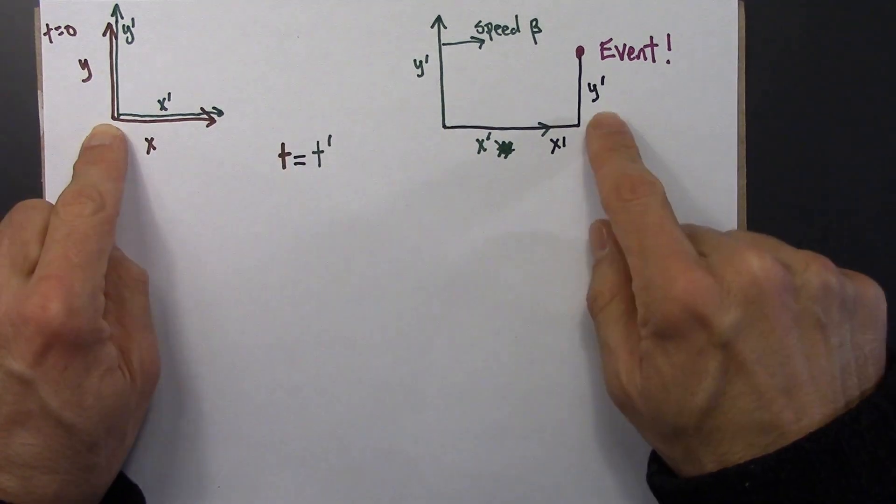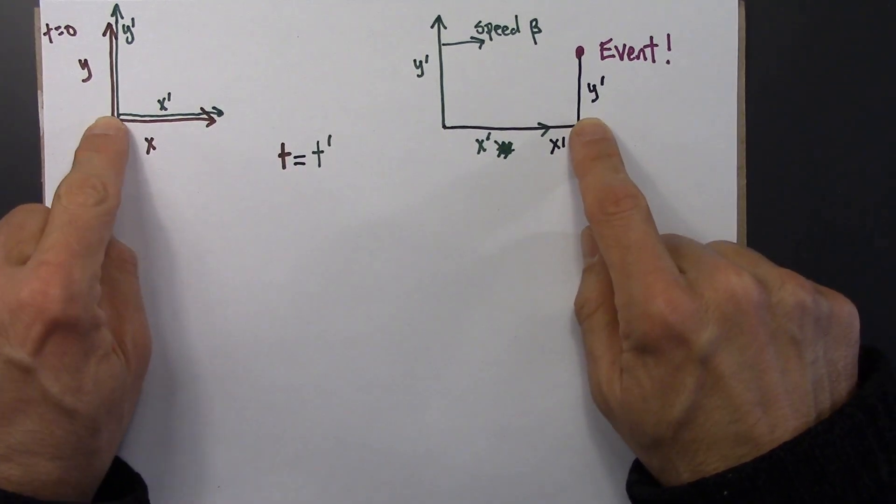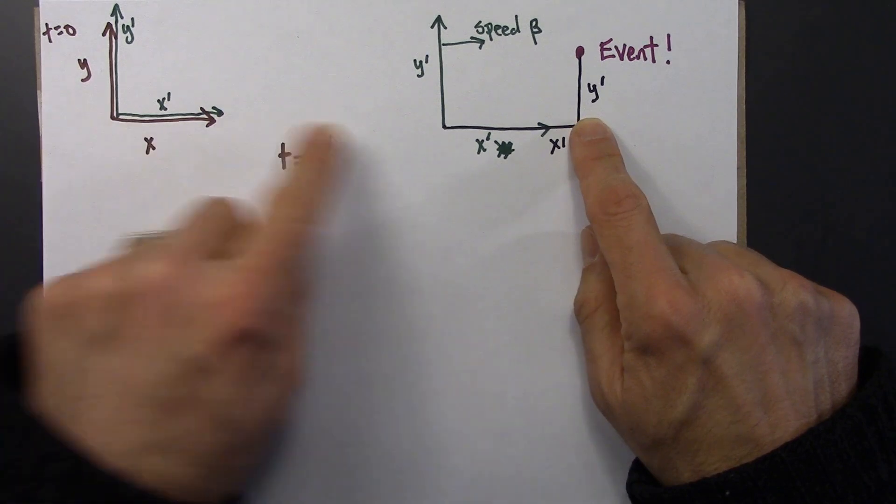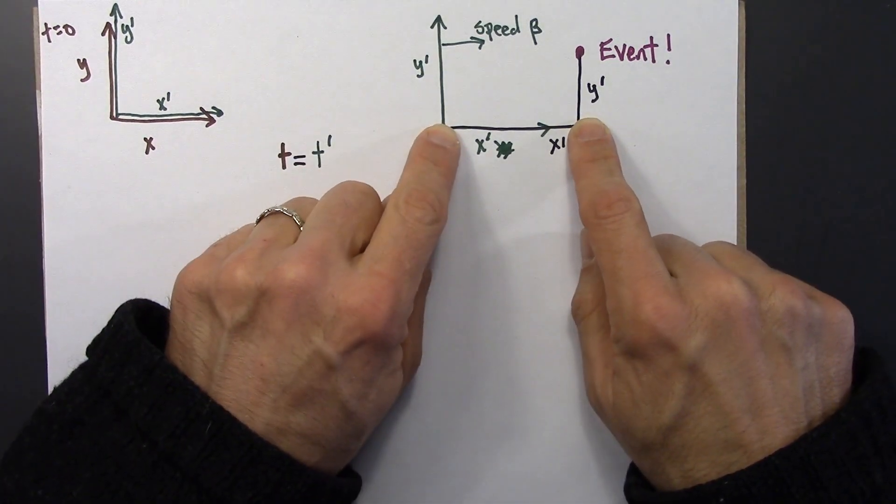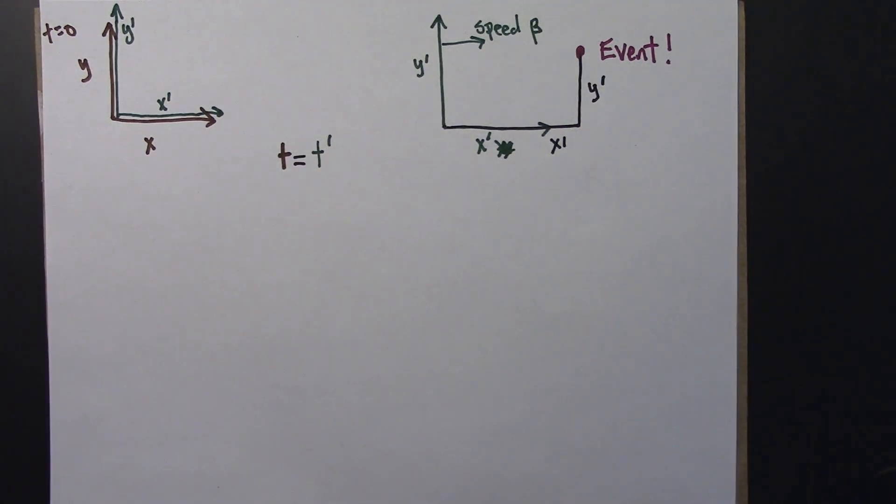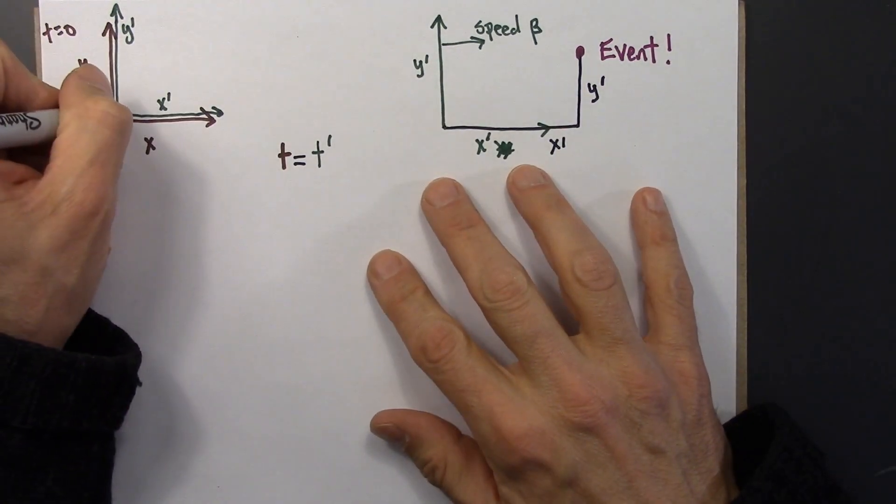But they're going to report, hey, this is far from my center, and this is going to say it's less far from my center. Alright, so I'm worried that this is going to become super messy, but I'm going to try anyway.